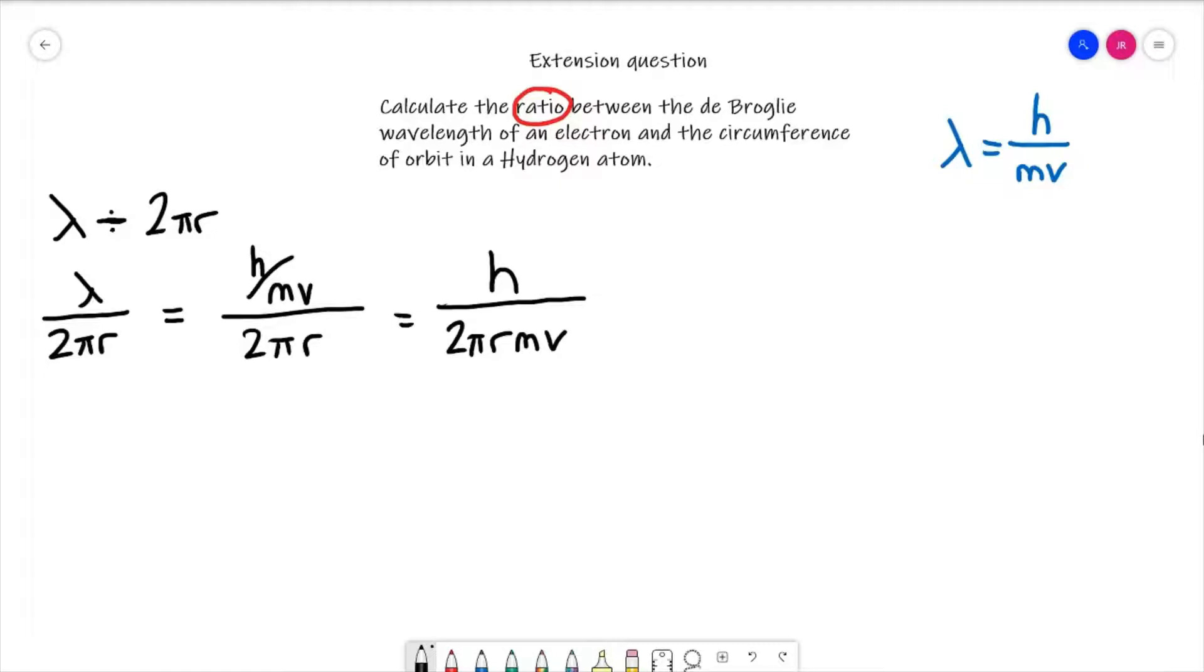Now at that point we can start to plug our numbers in. So Planck's constant then, 6.63 × 10⁻³⁴ divided by 2π. The radius from last lesson was 53 × 10⁻¹² meters. The mass of an electron was 9.11 × 10⁻³¹. And our velocity from last lesson was 2.18 × 10⁶ meters per second.